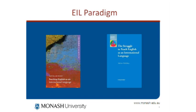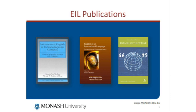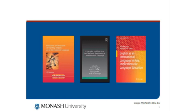The EIL paradigm is partly reflected in the number of publications that have emerged in recent years: Teaching English as an International Language, The Struggle to Teach English as an International Language, International English and its Sociolinguistic Context, English as an International Language: Perspectives and Pedagogical Issues, English in the World, Principles and Practices for Teaching English as an International Language, and English as an International Language in Asia. These publications kind of herald the emergence of the new paradigm.